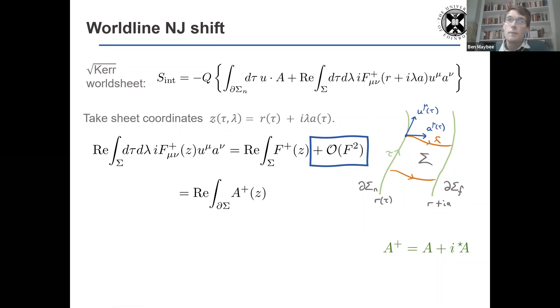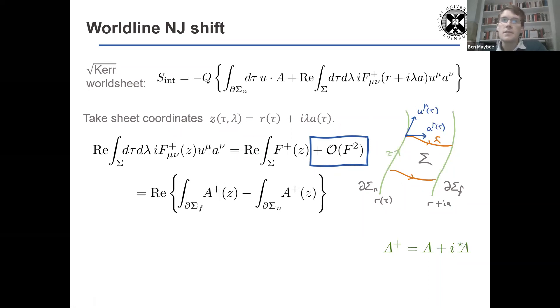And now I have an integral over the boundaries, remembering that the far boundary is the one where the Newman-Janis shift was. So, of course, we can split up that integral, and we have a difference in the two. And now the signs conspire nicely, such that the integral of this chiral combination of the gauge fields over the near boundary, so the real worldline, cancels with the standard electromagnetic interaction term.